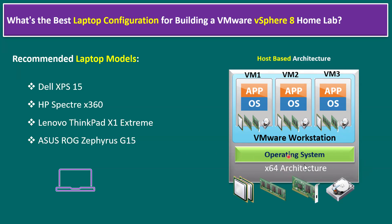If you are using a macOS or Linux-based system, you can use VMware Fusion. If you are using Windows client OS, you can install VMware Workstation. Using VMware Workstation you can configure multiple virtual machines — this is called a host-based architecture.